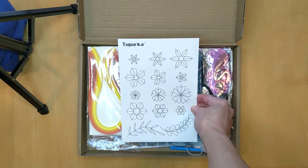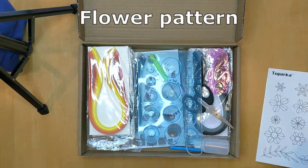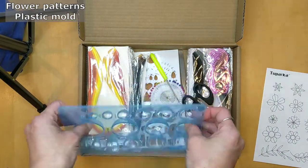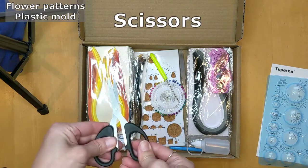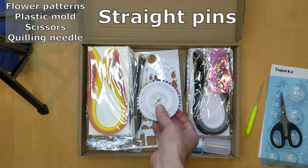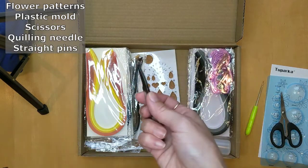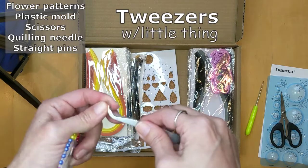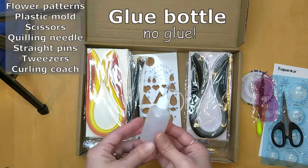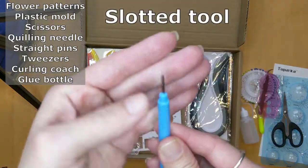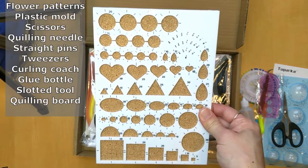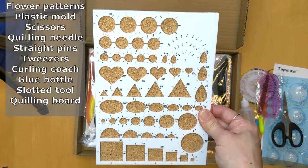Okay we have some flower guides. This is a mold, concave on this side, sticks out on that side. Scissors, awl or quilling needle, straight pins, tweezers, curling coach, glue bottle, slotted tool, and a template for making different shapes or if you want to make shapes of all the same size.